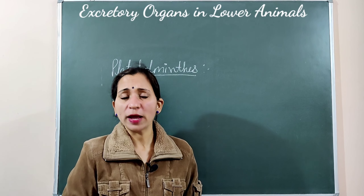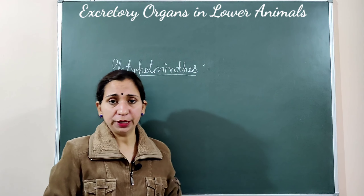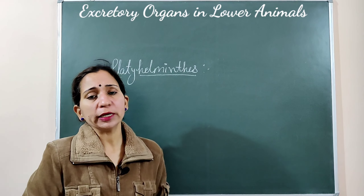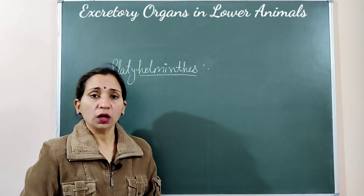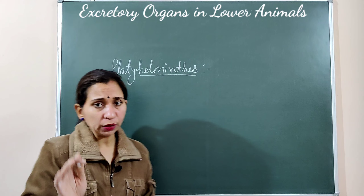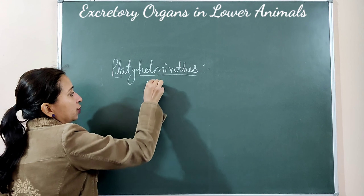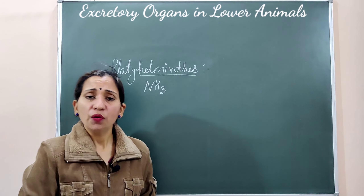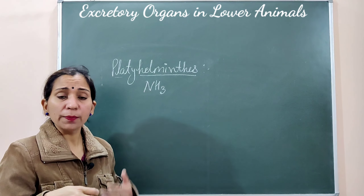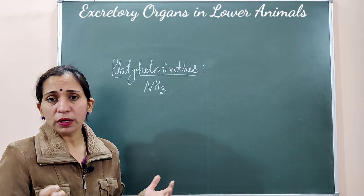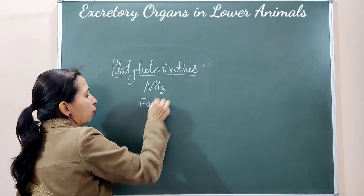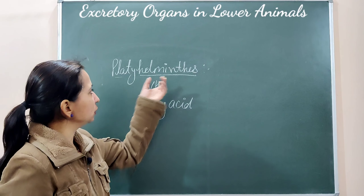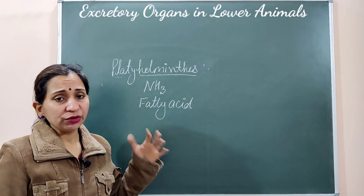The next phylum is Platyhelminthes, also known as flatworms. In this phylum we have Planaria, tapeworms, liver flukes. When these flatworms are in an aquatic environment, they excrete their nitrogenous waste in the form of ammonia. Whereas if they are present in the parasitic form — present inside a host's body — in this situation they excrete their nitrogenous waste in the form of uric acid.